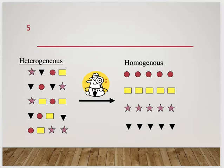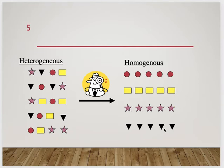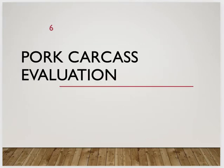This slide illustrates what we do. On the left we have a heterogeneous, randomized mix — nothing in order. The USDA grader, the guy with the magnifying glass, takes everything, puts a grade on it, and through that process we sort everything into homogeneous groups: all circles together, all yellow squares together, all pink stars, all black triangles. We do this on all species — pork, beef, lamb, poultry.